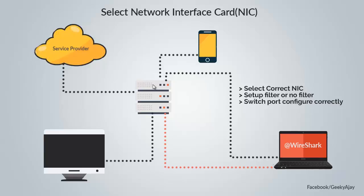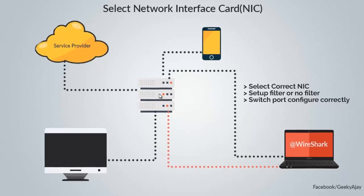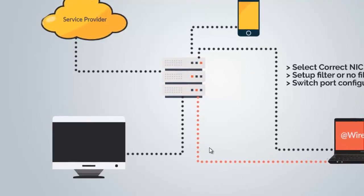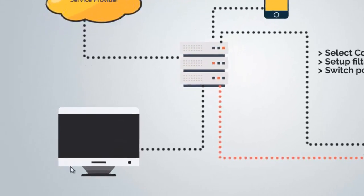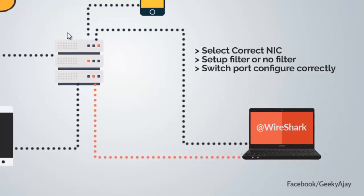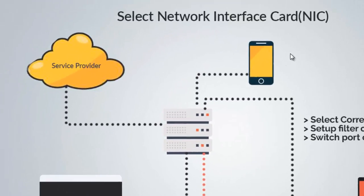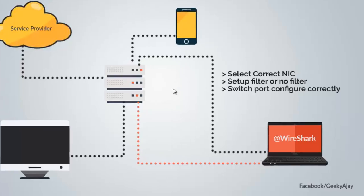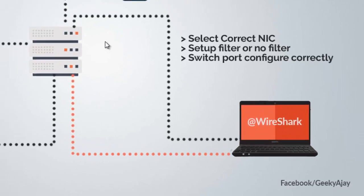If you have multiple spanning sessions on your switches, you can choose the correct one that has the right traffic for capturing. For example, two spanning sessions and two NICs can be used: one NIC captures desktop PC traffic and another NIC captures mobile and portable device traffic. This helps provide a better analysis of your network. Please subscribe to the channel — thanks!